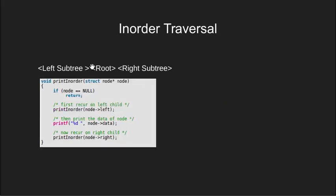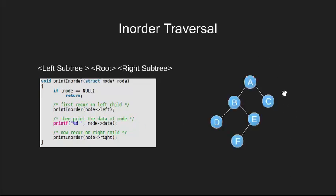Next we have inorder traversal. In this we first traverse the left subtree, then we traverse the root content, and then the right subtree. This will be the algorithm for inorder traversal, with only a slight difference from the preorder one. We will also use the same tree for demonstration. We begin with node A. Since it is not null, we go to its left subtree. D is again not null, so we go to its left subtree which is null.